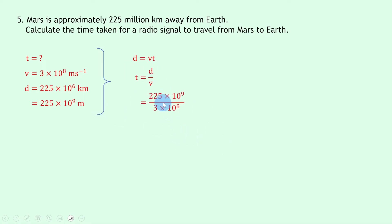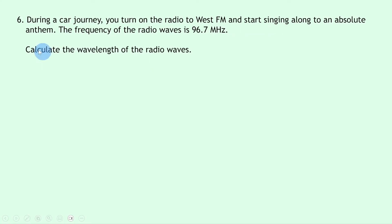Substituting in the numbers gives 225 × 10⁹ divided by 3 × 10⁸, and putting that into your calculator should give an answer of 750 seconds.